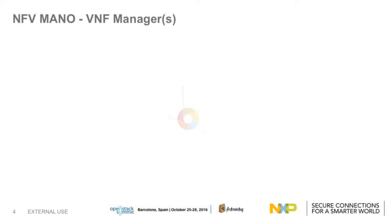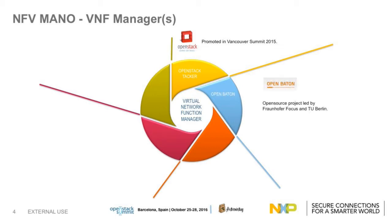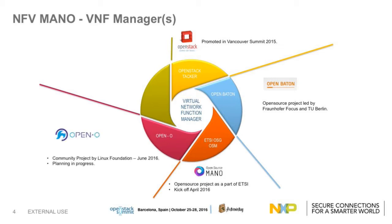Here is the complete overview of VNF managers in the NFV MANO world. We have OpenStack — a big umbrella — and we have OpenStack Tacker promoting from the Vancouver Summit. We also have OpenBaton, which is open source by Fraunhofer FOKUS and TU Berlin. We have the ETSI homegrown open source group, Open Source MANO, with a kickoff in April 2016. We have OpenO, an open orchestrator that is just booming. Furthermore, we have OpenNet and Cloudify. In the following slides, I'll move into some technical details and overview of these VNF managers.